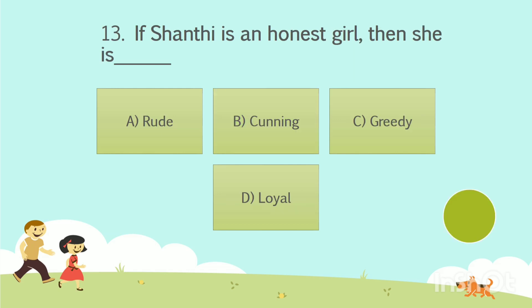Question No. 13. If Shanti is an honest girl, then she is — . Option A: Rude. Option B: Cunning. Option C: Greedy. Option D: Loyal. Your time starts now. The answer is Option D, Loyal.